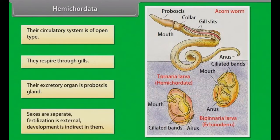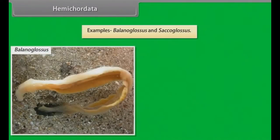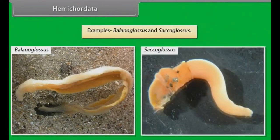Their excretory organ is the proboscis gland. Sexes are separate. Fertilization is external. Development is indirect. Examples: Balanoglossus and Saccoglossus.